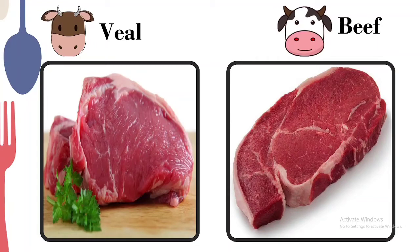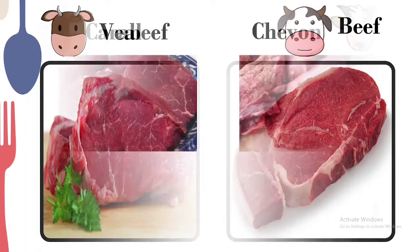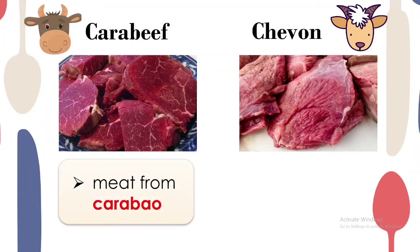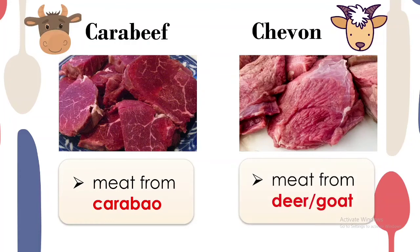For our last two sources of meat: cara beef is meat from carabao, and chevon is meat from goat. Cara beef is also tough, similar to beef, so it is perfect for processed meats like beef jerky or tapa. Chevon is commonly used in dishes like kaldereta or adobo during fiestas and gatherings.